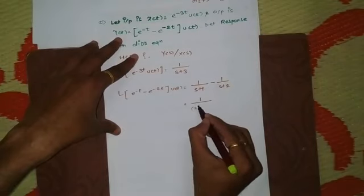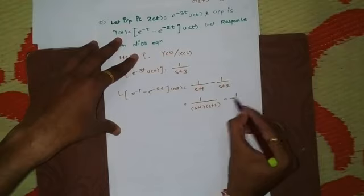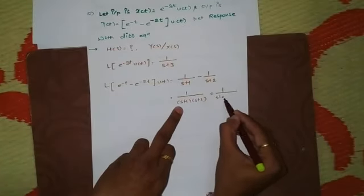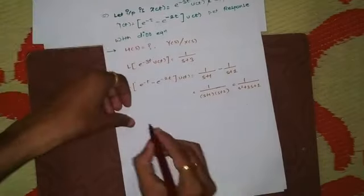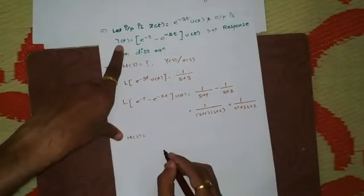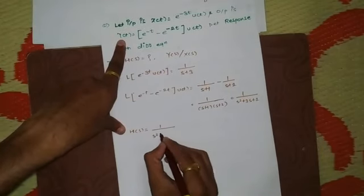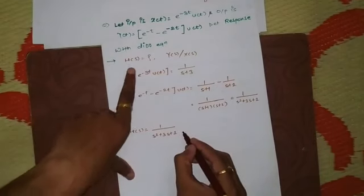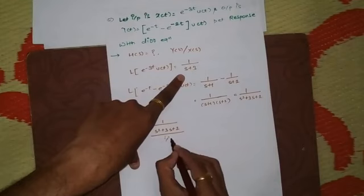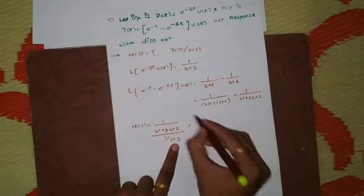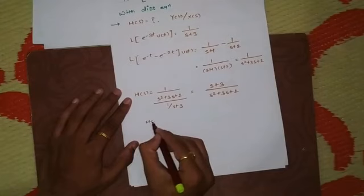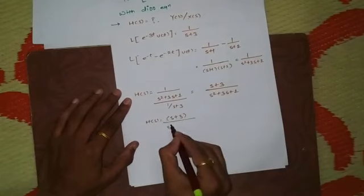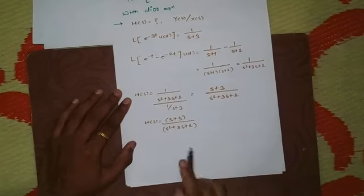Multiplying out (s+1)(s+2) gives s² + 3s + 2. So Y(s) = 1/(s² + 3s + 2). Dividing by X(s) = 1/(s+3), the (s+3) moves to the numerator, leaving H(s) = (s+3)/(s² + 3s + 2). This is the response of the system.